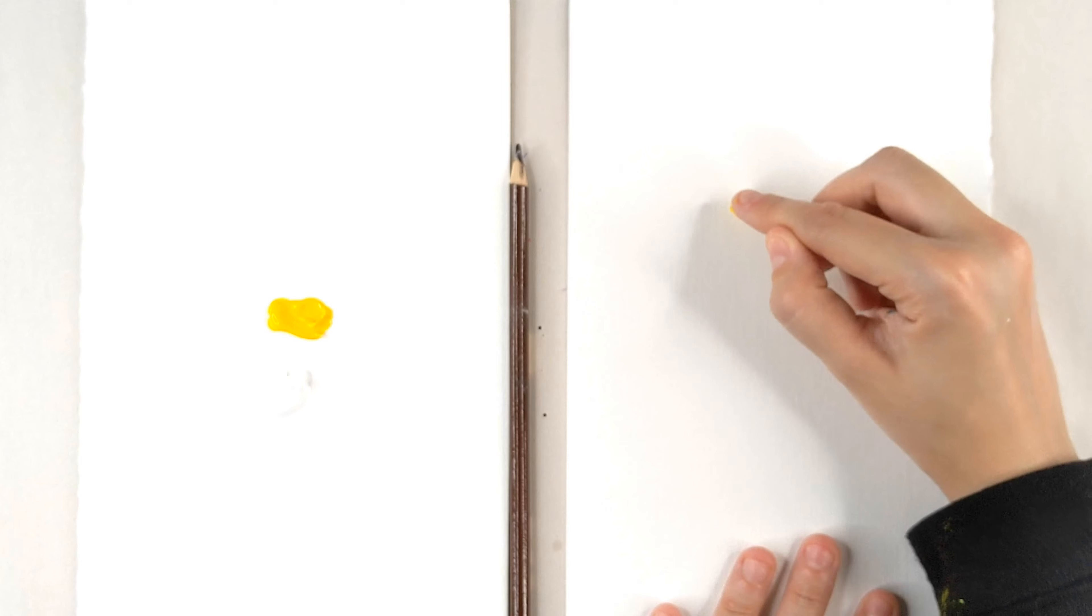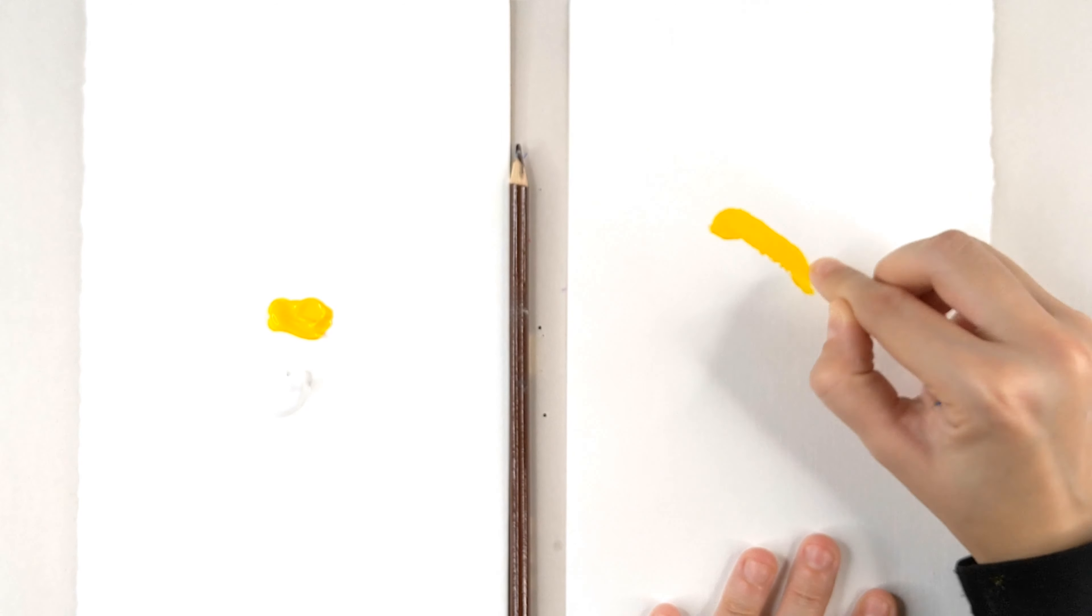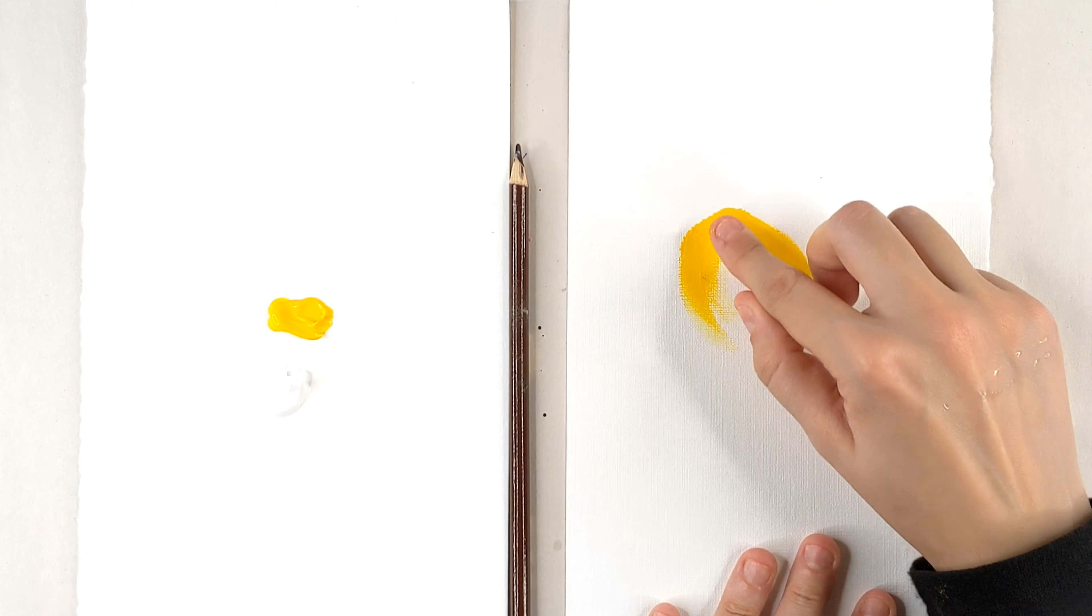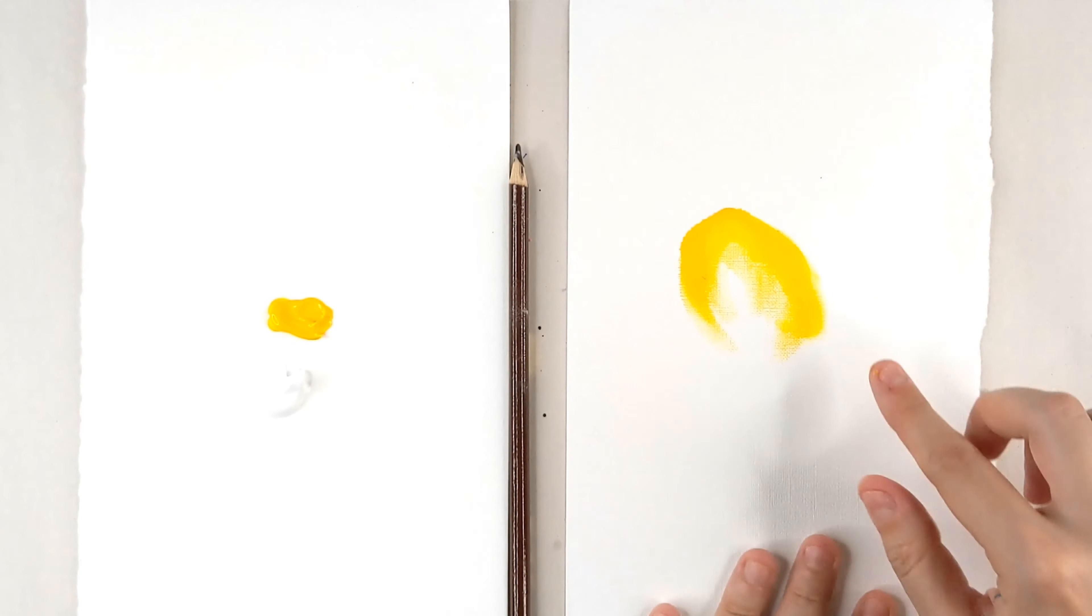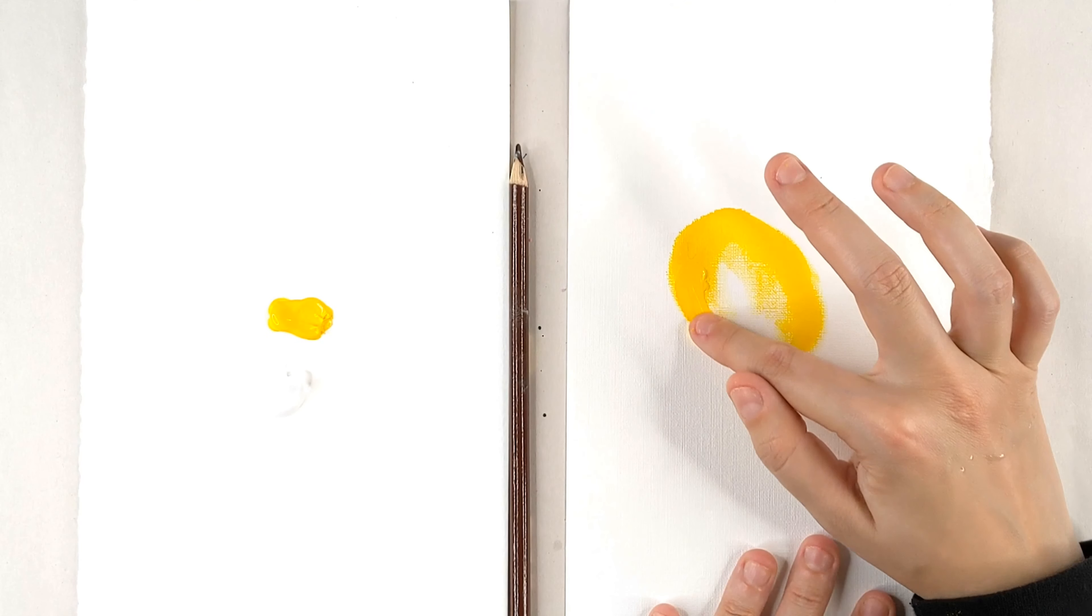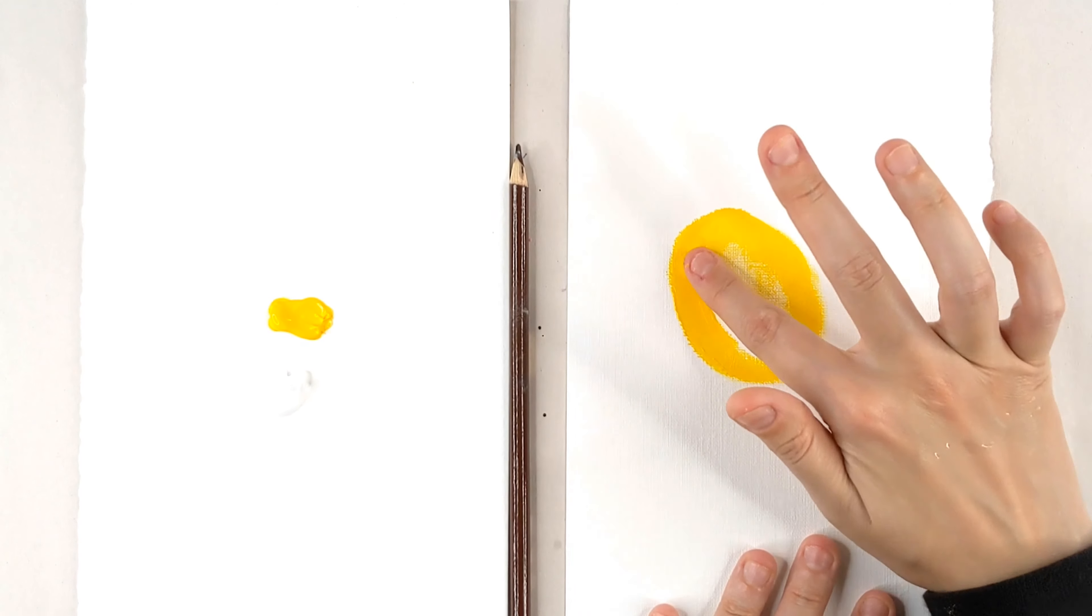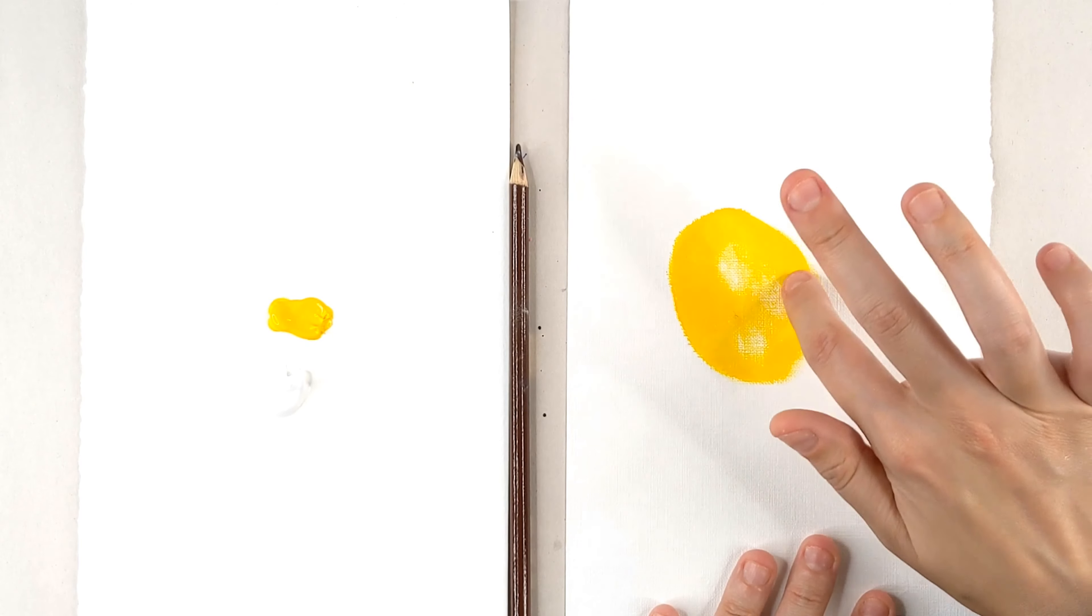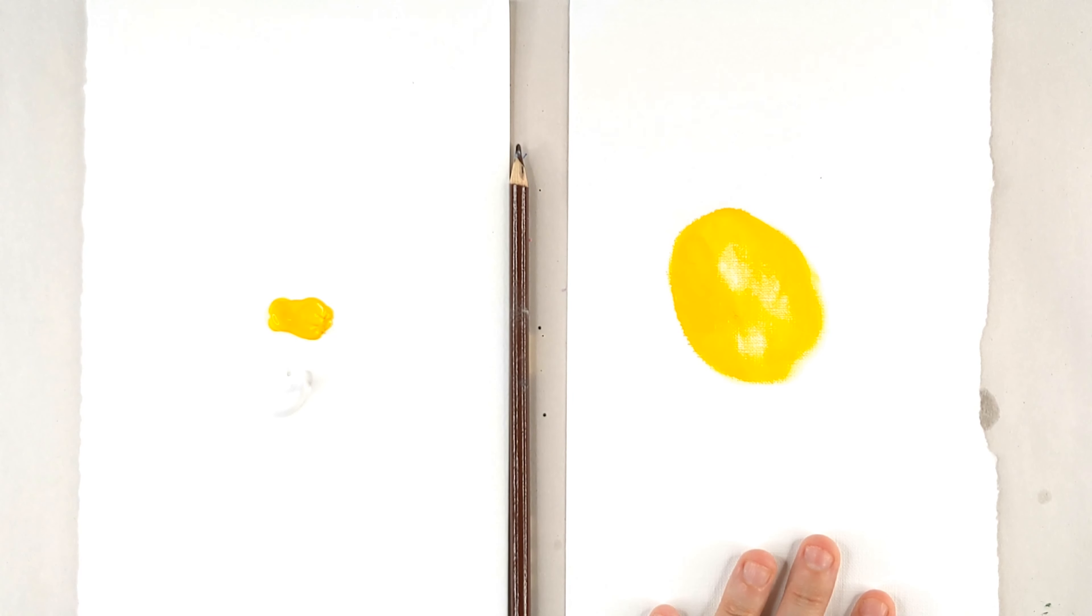So I've got some yellow. I'm going to make a half circle. Actually let me just make a full-on circle, kind of round though. Let's make it an oval. Let's do an oval.